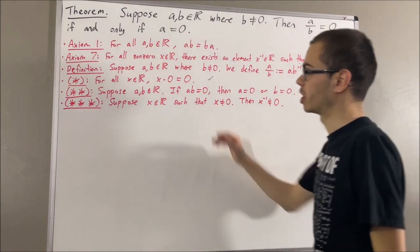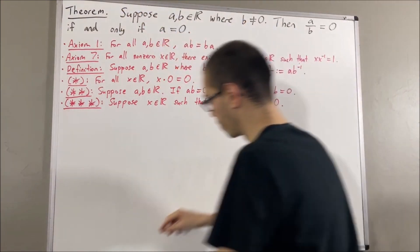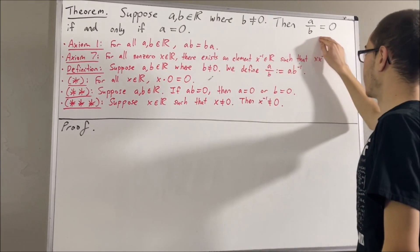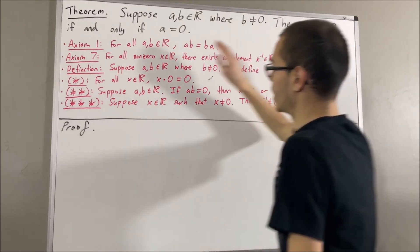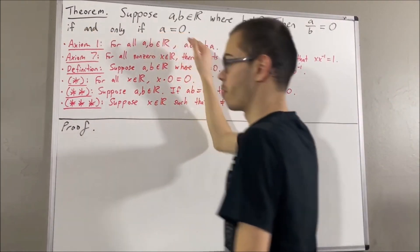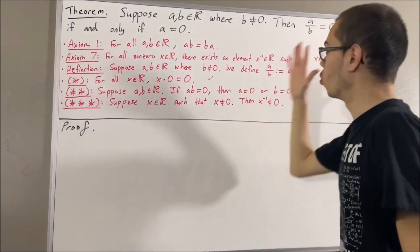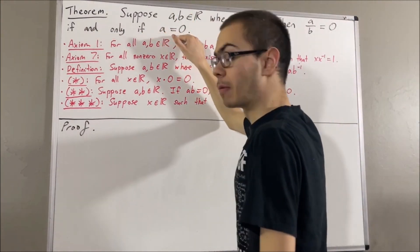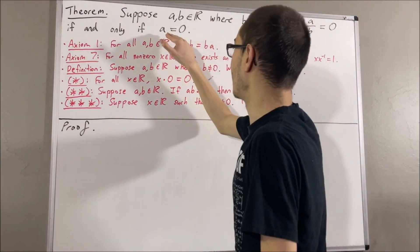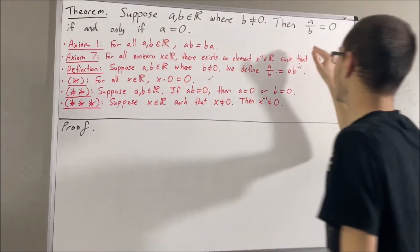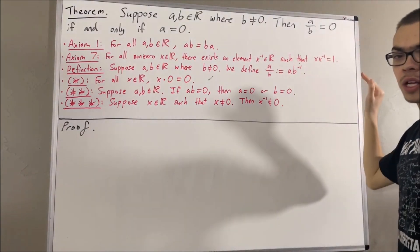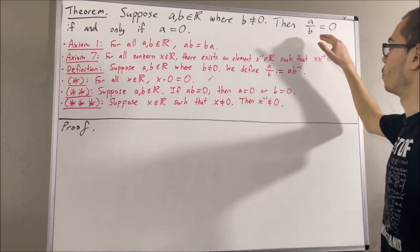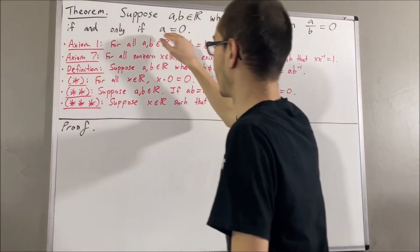Okay, so now let's get into proving this theorem. We're trying to prove that a over b is equal to 0, if and only if a is equal to 0. To prove that, we're going to prove if a over b is equal to 0, then a is equal to 0. And then we're going to prove if a is equal to 0, then a over b is equal to 0. Let's first prove the forward direction: if a over b is equal to 0, then a is equal to 0.